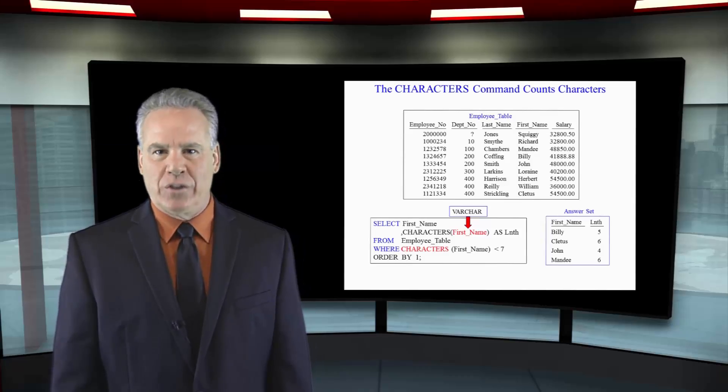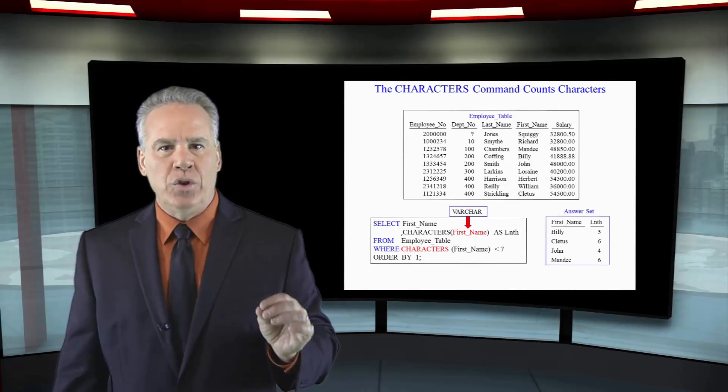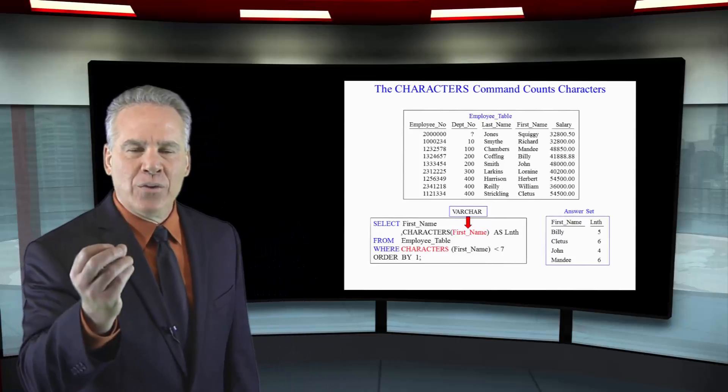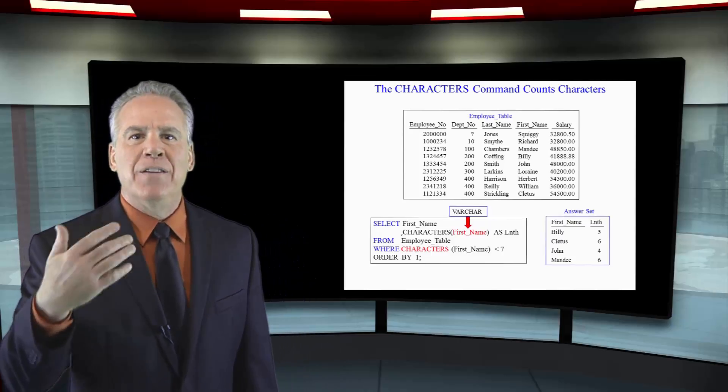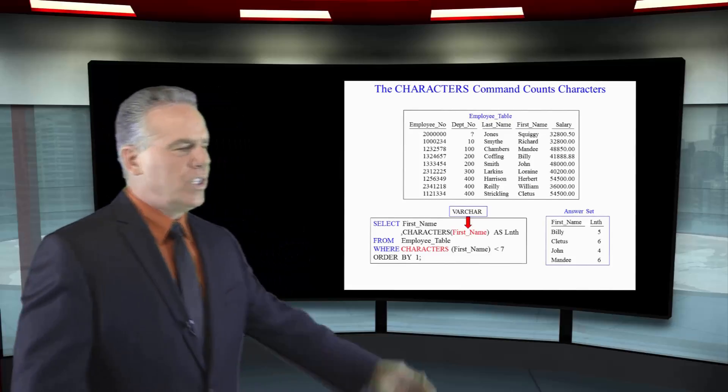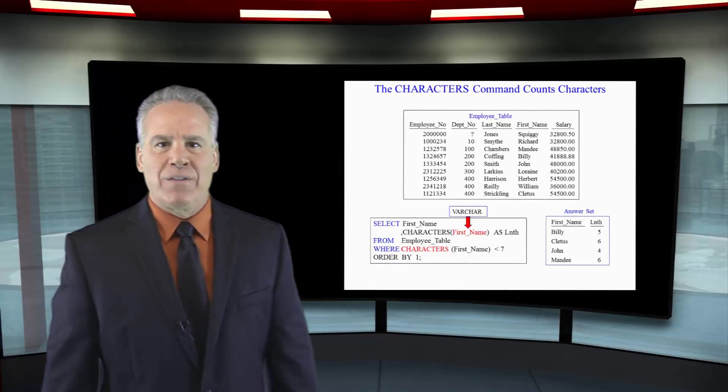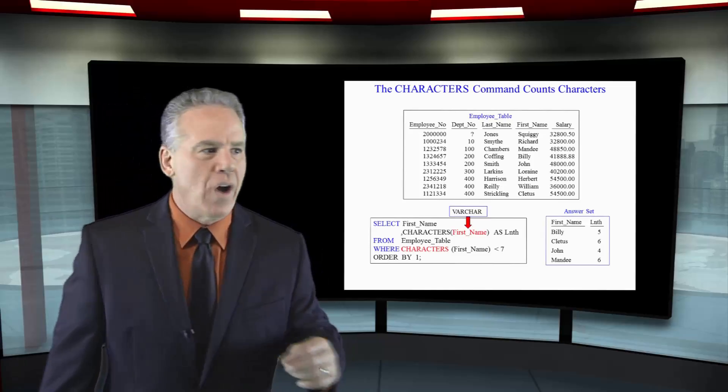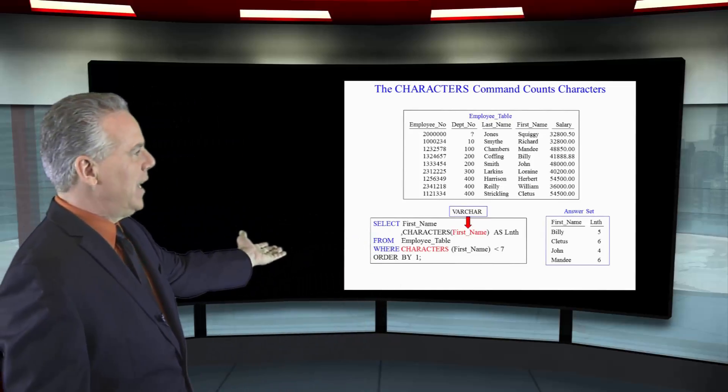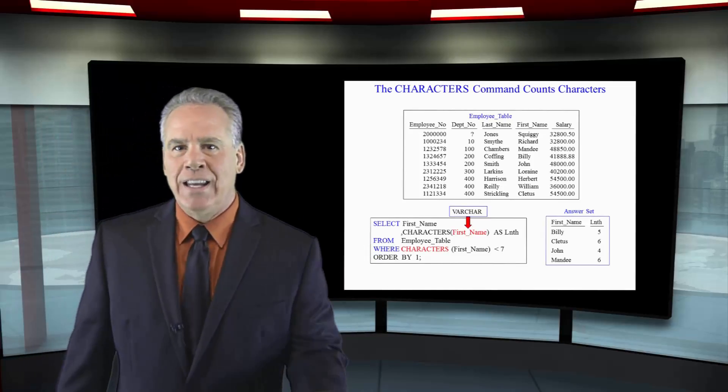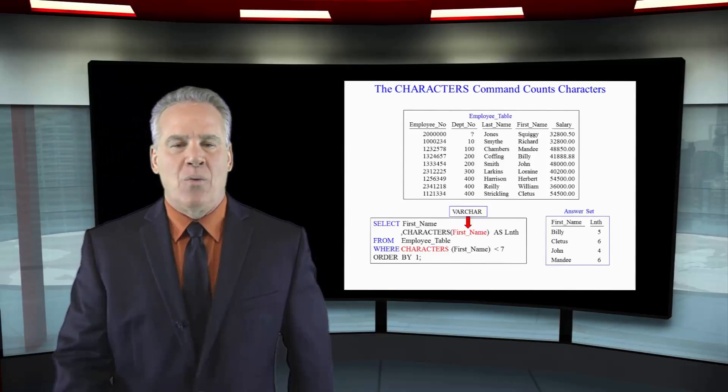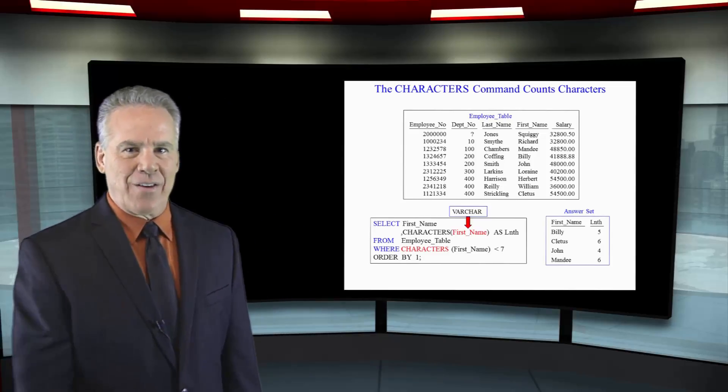We're going to first take a look at the CHARACTERS command and what this will do. It's designed to count the number of characters in a VARCHAR field. As you can see here, we're going to select the first name, then count the characters in the first name. We also have the CHARACTERS command again and the WHERE clause getting only the first names where there are less than seven characters.